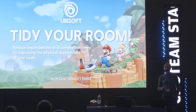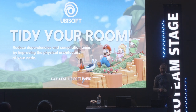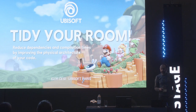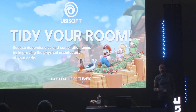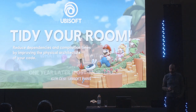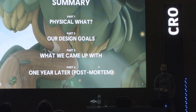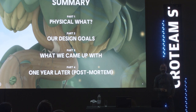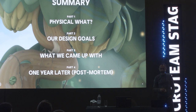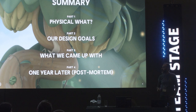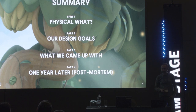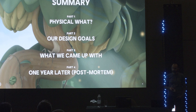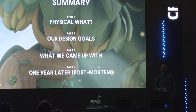However, this is not a fatality. By improving the physical architecture of your code, you can improve the cost of maintenance and even the potential for individual reuse of individual systems. About a year ago, the engineers from the former Mario plus Rabbids game took the challenge of redesigning the physical architecture of their engine. This talk describes their design goals, the result of the design process, as well as some post-mortem results one year later. But before starting, I propose going through a reminder of what physical architecture is all about.